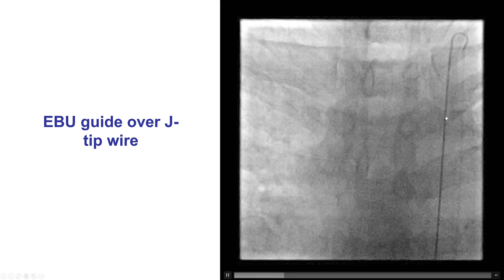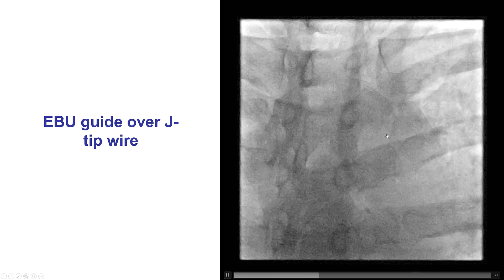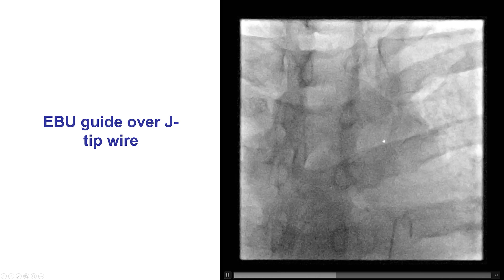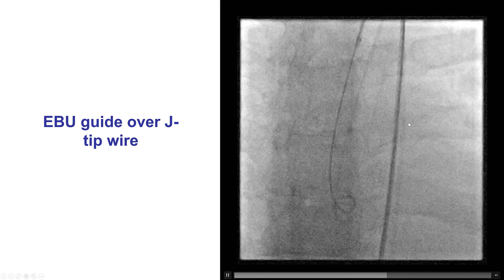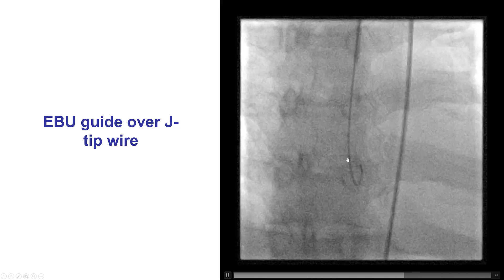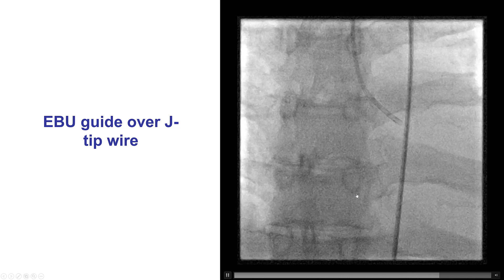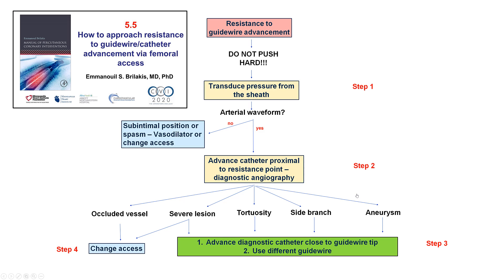Sometimes the guide wire may enter branches — for example, here it's going to the left subclavian artery. In such cases, the wire is pulled back and redirected into the ascending aorta. If there is resistance to guide wire advancement, this is described in detail in video 5.5, but the key concept is to not push hard.